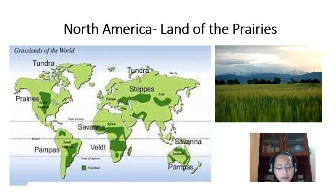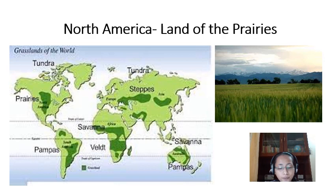The temperate grasslands of North America are known as the prairies. The word prairie originated from the Latin word praeata, which means meadow. It is a region of flat, gently sloping or hilly land. For the most part, prairies are treeless, but near the low-lying plains flanking river valleys, woodlands can be found.